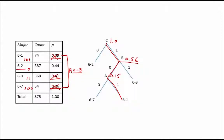These encodings make sense because we expect the major with the highest probability in this case Major 6-2 to end up with the shortest encoding. The next highest probability major is 6-3 so it ends up with the second shortest encoding, and so on.